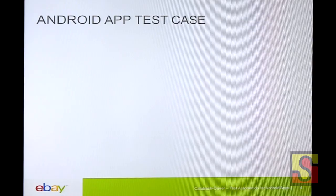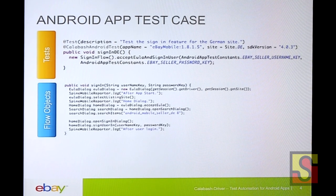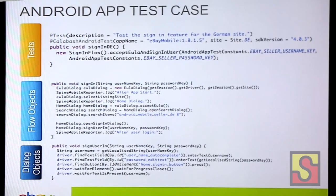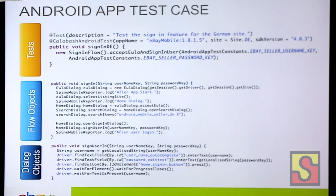We write our tests in Java, driven with TestNG. The business scenario is encapsulated in flow objects, and delegation to different dialogue objects is done there. Dialogue objects are the same thing as page objects — but since you're testing mobile apps, it's not really a page, it's more like a dialogue, so I prefer to call it a dialogue object.